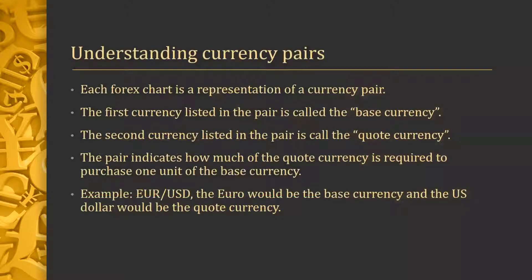Each Forex chart is a representation of a currency pair. The first currency listed in the pair is called the base currency. The second currency listed in the pair is called the quote currency. The pair indicates how much of the quote currency is required to purchase one unit of the base currency.